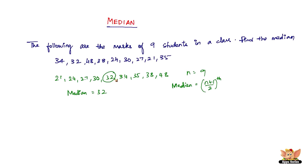It's not 5 itself, but that fifth value is the median. So 9 plus 1 by 2 equals 10 by 2, which equals 5. So the fifth value is the median of the given distribution of observations.